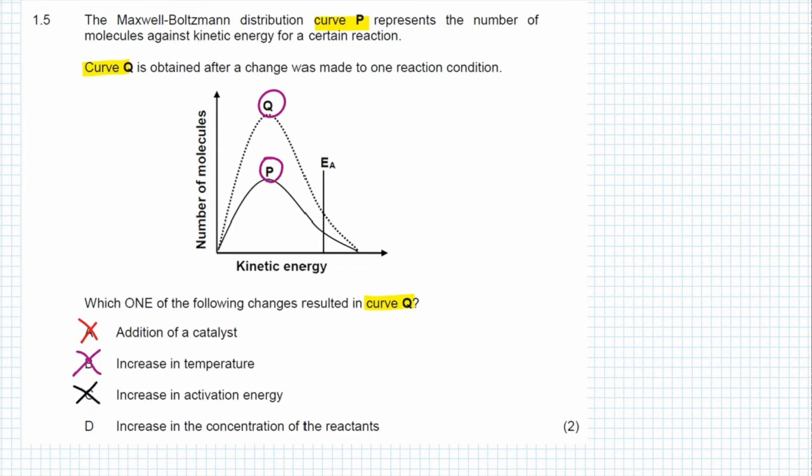D says an increase in the concentration of reactants. If the concentration of the reactants increases, it means that we have more particles taking place in this reaction. As you can clearly see, curve Q has a greater surface area underneath the graph when compared with curve P. When we are looking at curve Q it represents a reaction where we have more particles, and therefore D is the correct answer.